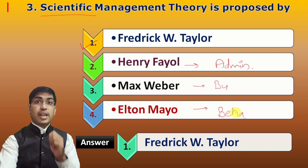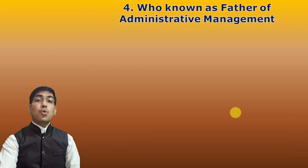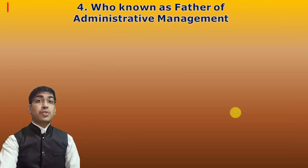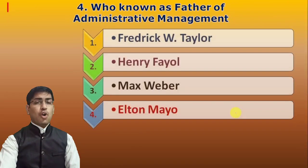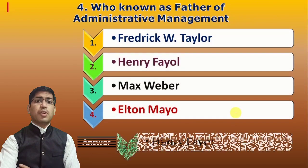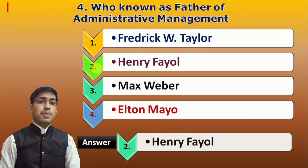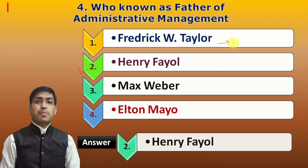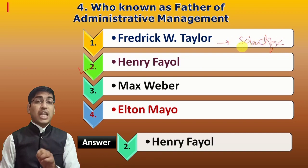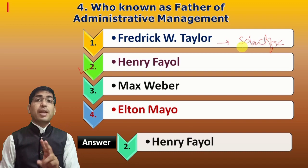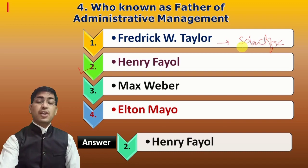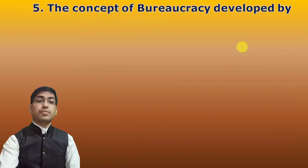Next question: Who is known as the father of administrative management? The administrative management theory was proposed by Henry Fayol, while scientific management was proposed by Frederick Taylor. So the answer for father of administrative management is Henry Fayol, and for scientific management it is Frederick Taylor.